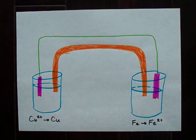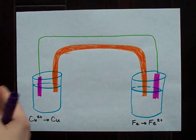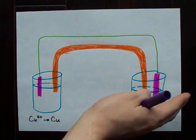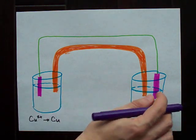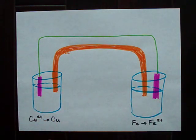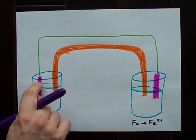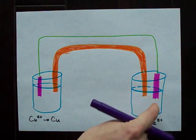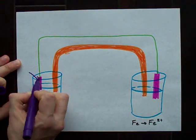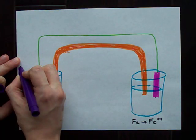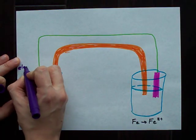Alright guys, this is the boring bit, but I've got to teach you the terminology for what's happening inside of an electric cell. We have two beakers with solutions inside each of them. We have metal plates submerged in each of the solutions, and these metal plates are called electrodes.